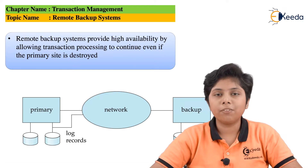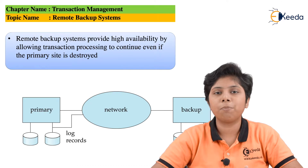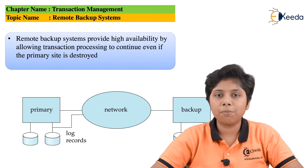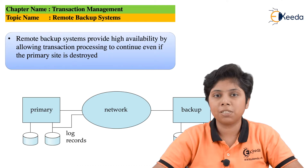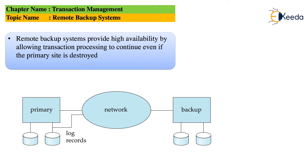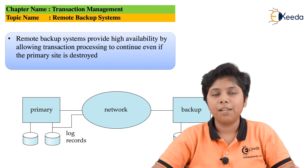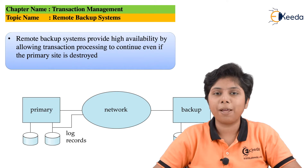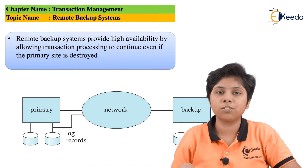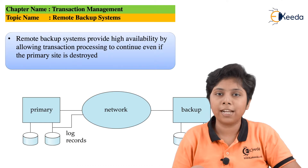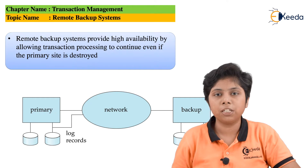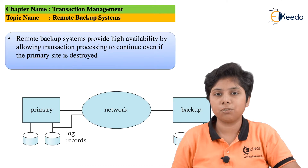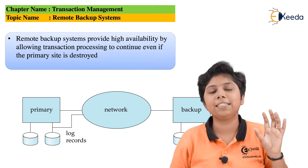In the remote backup system, there are two sites. The first is the primary site, where all database accesses are performed. The second is the secondary site, which stores the database content. The primary site accesses and fetches data from the remote or secondary site. The advantage is that even if the primary site fails — due to environmental or hardware/software destruction — the secondary site still remains.